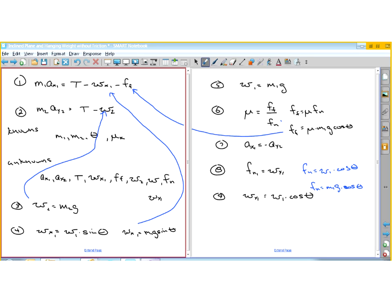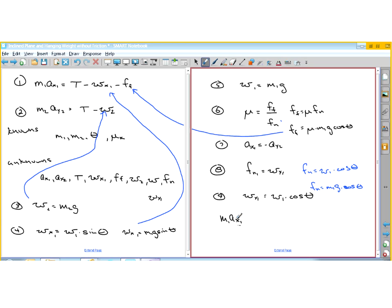So I think once I make all the substitutions, I'm going to have two equations. I'm going to do it right down here so I can see it all. So I'm going to have M1A sub X1 is equal to T minus W sub X1, but that is M1G sine of theta. So that's that part minus the friction force, which is equal to mu M1G cosine of theta. So that's the first equation, and that's equation one rewritten. And then I'm going to have, okay, I need to also do this acceleration substitution, which I didn't do yet.